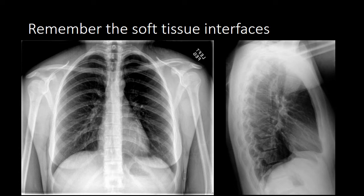A key to localizing abnormalities in the chest is recognizing and remembering your soft tissue interfaces. The features or lines that we see on a radiograph are due to differences in density between adjacent structures — so muscle and bone, or muscle and the lung tissue, or the heart and the lung, or blood vessels and the lung. Each of these different interfaces, when obscured or abnormal, as Dr. Ayoub has described in the past, help us identify where something is located in the chest.